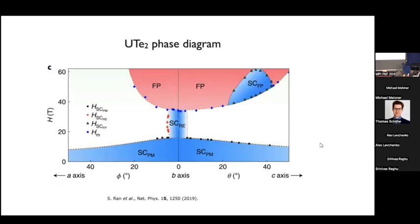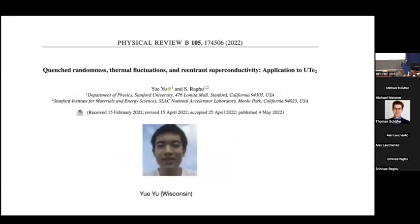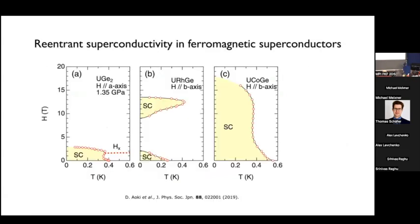The first part of my talk is on the phenomenon of re-entrant superconductivity — the 're' in the subscript — and I want to describe what that is and how to understand it. This is based on insights of my former student, now a postdoc at Wisconsin with Dan Agterberg. Re-entrant superconductivity has been observed experimentally in several heavy fermion superconductors containing uranium, which have coexistence of ferromagnetism and superconductivity. I give examples here — uranium germanium two.